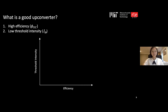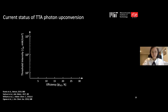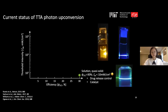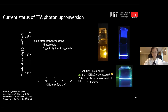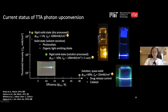To evaluate an upconverter, we care about efficiency and the required excitation intensity — ideally both should be low. TTA upconversion is very successful in solution and gel systems and has demonstrated applications in drug release control and photoredox catalysis. However, applications like photovoltaics or organic LEDs require rigid solid-state systems, and unfortunately upconversion in solid state doesn't work as well.